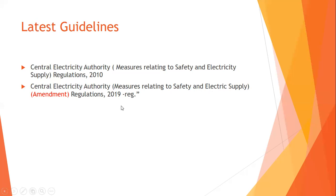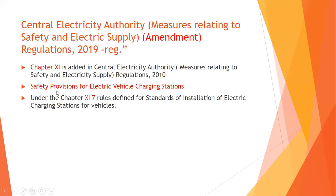In the 2019 amendment, requirements and standards for electrical vehicles were published. Chapter 11 was added to the Central Electricity Authority measures relating to safety and electric supply regulations (originally published in 2010), specifically covering safety provisions for electric vehicle charging stations. Under this chapter, seven rules are defined for standards of installation of electric vehicle charging stations.